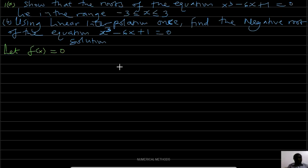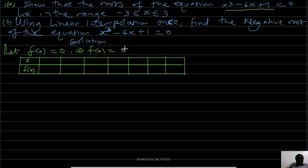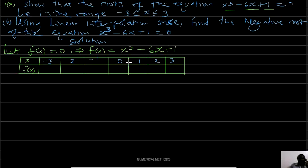We are going to set up a table with values of x and f(x), where f(x) = x³ - 6x + 1. Our values of x range between -3 and +3, so we pick integers: -3, -2, -1, 0, 1, 2, 3.